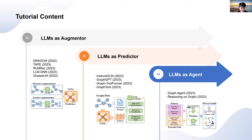The first one is large language models as enhancers. In this approach, large language models are employed to augment the graph structure or the features of nodes and edges. By leveraging the contextual information captured by large language models, the graph representation can be enriched, leading to improved performance on downstream tasks.